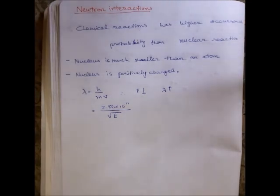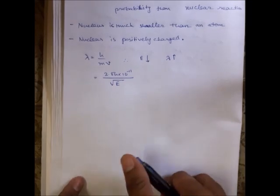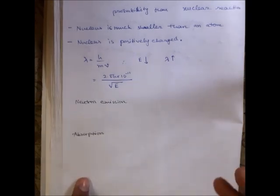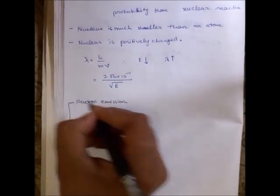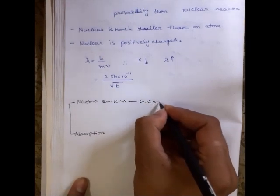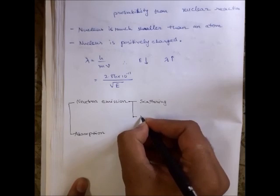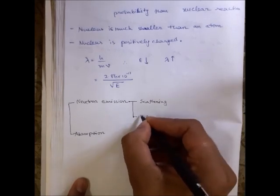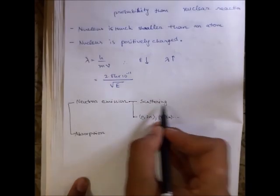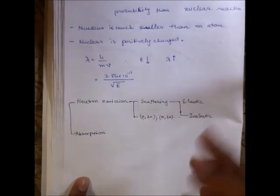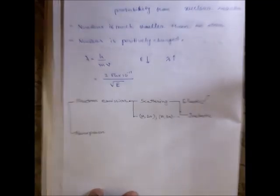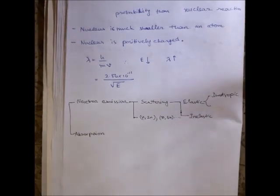A neutron will interact with the nuclei in multiple ways like neutron emission and neutron absorption. There are two more ways in which neutron emission can take place: one is scattering and the other is neutron non-collision. Neutron scattering can further be classified into elastic and inelastic, and elastic collisions can be of two types: isotropic and anisotropic.